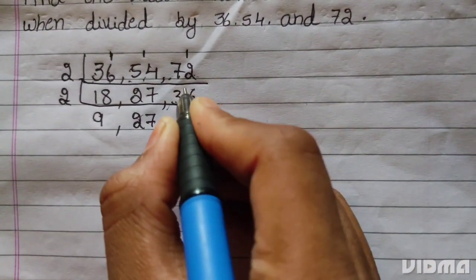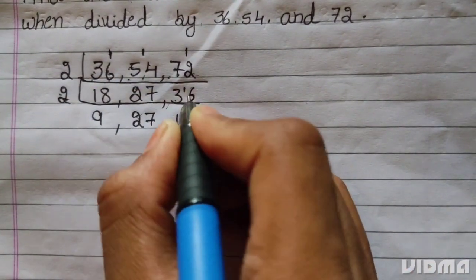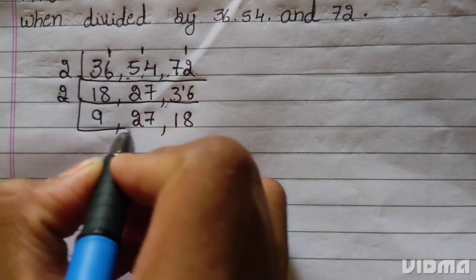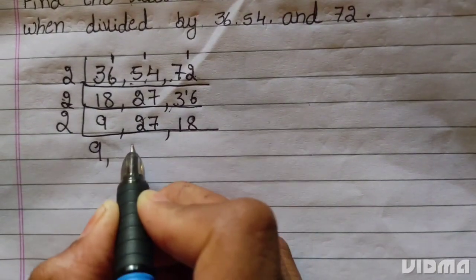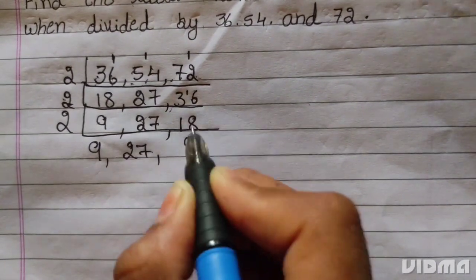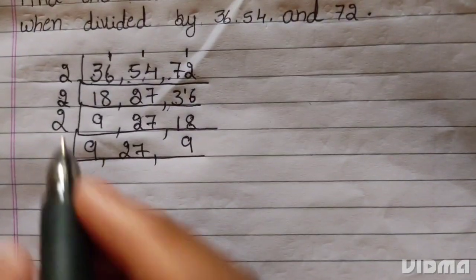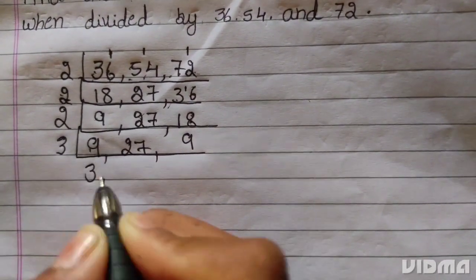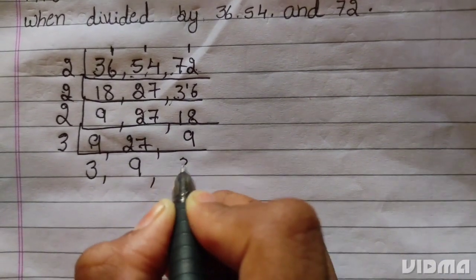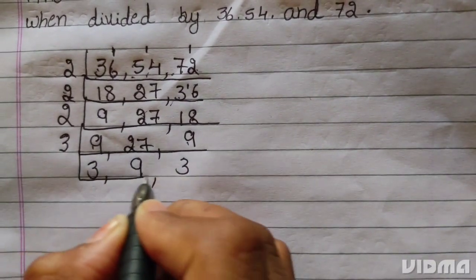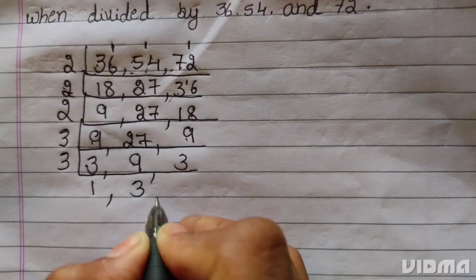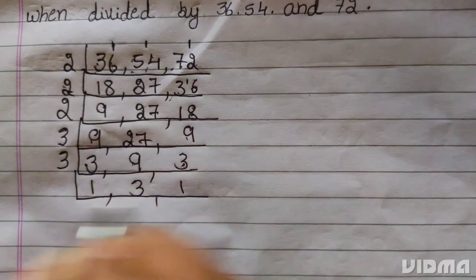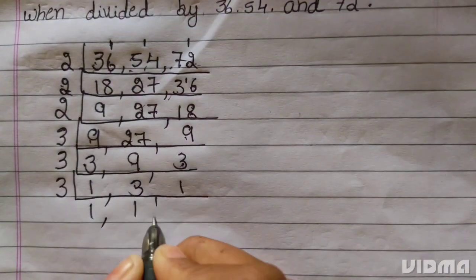2: 1 two is 2. 2: 8 twos are 16. 2: 9 twos are 18. 3: 3 threes are 9. 3: 9 threes are 27. 3: 3 threes are 9. 3: 3 ones are 3. 3: 3 threes are 9. 3: 3 ones are 3. 3: 1 three is 3.